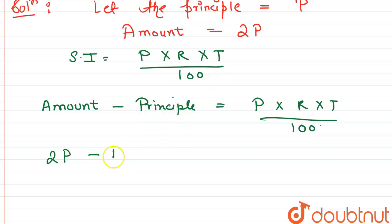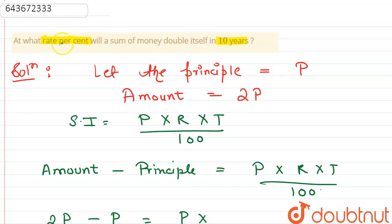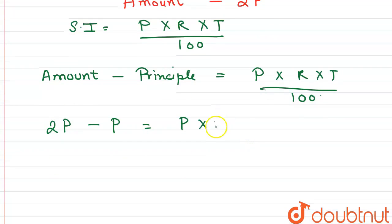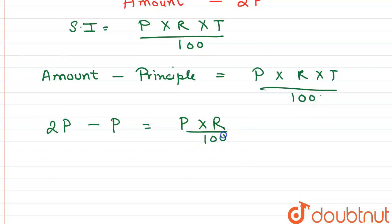Principle is P, rate of interest we have to find. So here R by 100, and time is given as 10 years. So here we write 10.